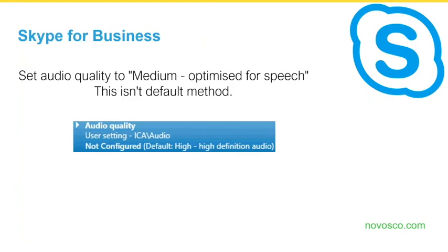For Skype for Business with the HDX Optimization Pack, make sure your audio quality is set to medium — optimized for speech. The hint is in the name. This isn't the default setting when you deploy Citrix, and it isn't just a recommendation — it's actually a requirement if you're using Skype for Business. Make sure it's set to medium quality.